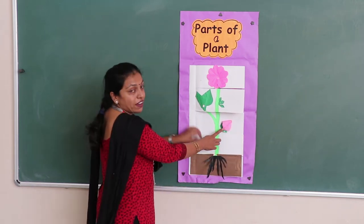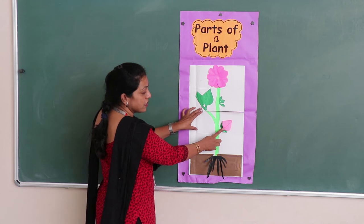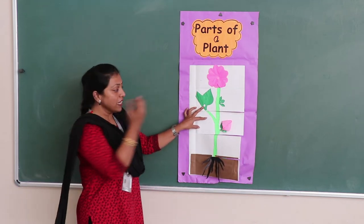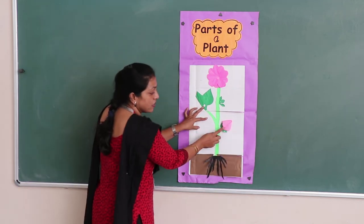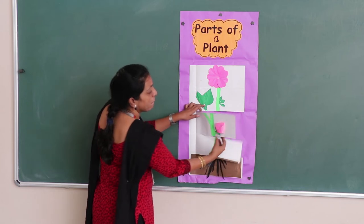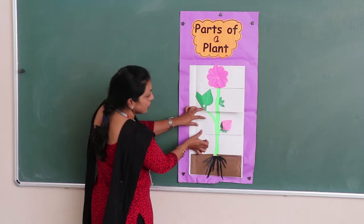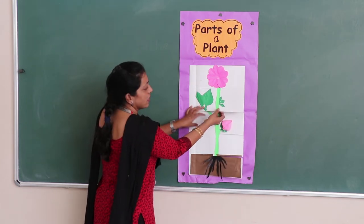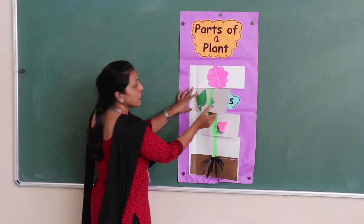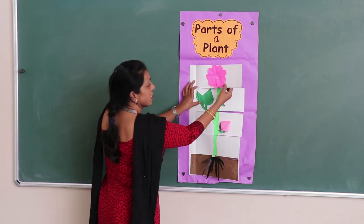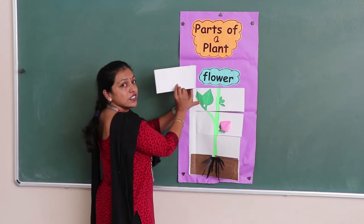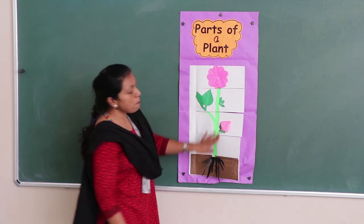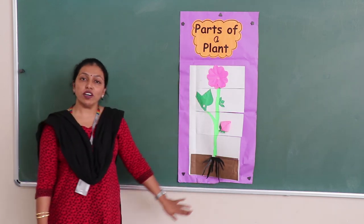Then we have the bud, which is before the plant grows big. This is a bud. Then we have the leaves. And last, the flower. So these are the different parts of a plant.